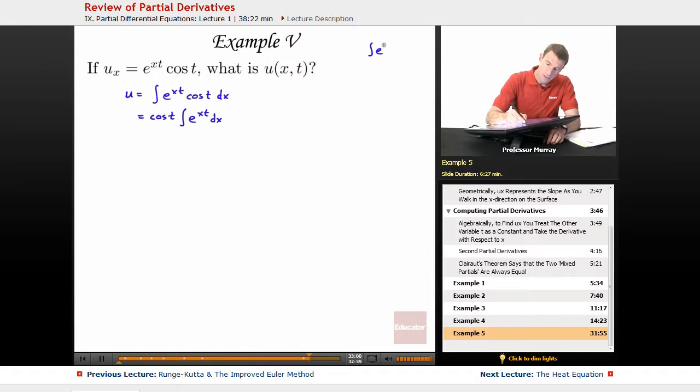e to the 4x dx would be 1 fourth e to the 4x plus a constant. That's going back to the old Calculus 1 technique of substitution. So if that looks foreign to you, maybe check back the Calculus 1 lectures here on educator.com. It's doing a little substitution, u equals 4x and du is equal to 4 dx.